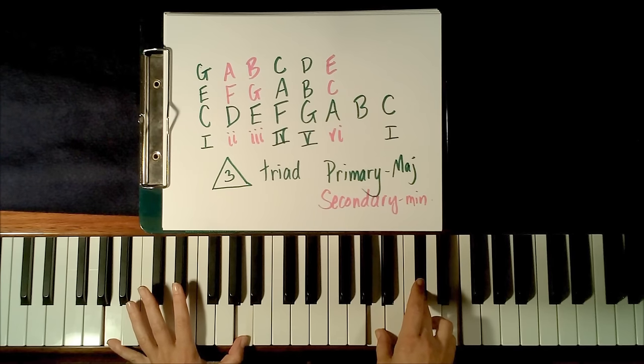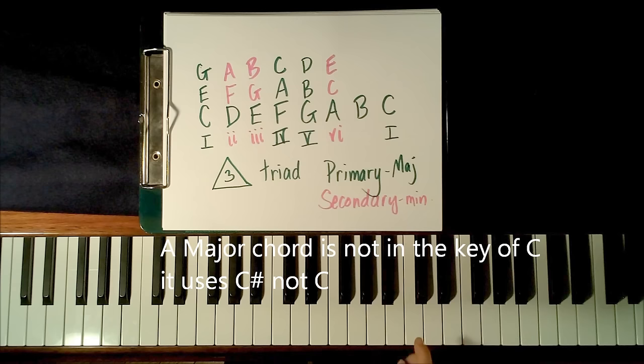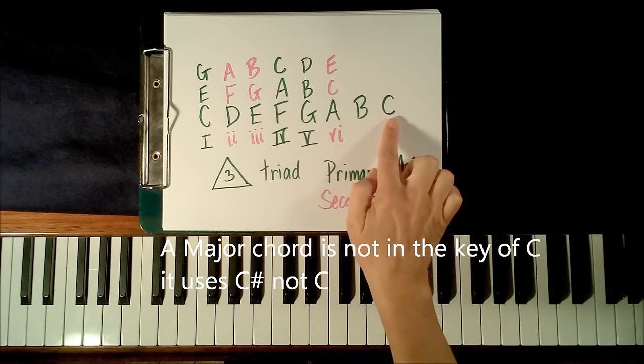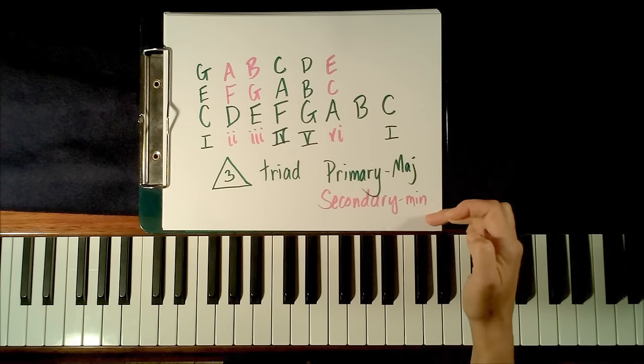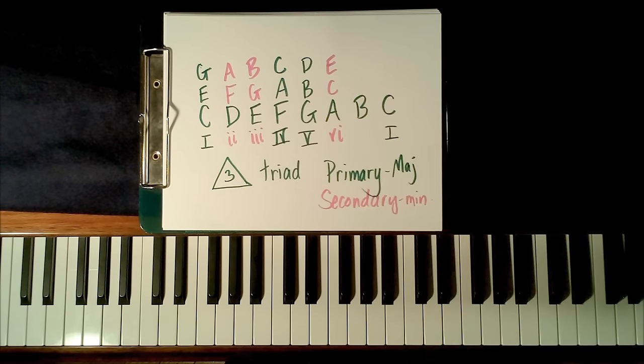You can hear it has a happy, cheerful, major sound. It's not found in the key of C, because the key of C does not have a C sharp. The key of C only uses white keys. So when we're playing in the key of C, and we play an A chord, it will be an A minor chord.